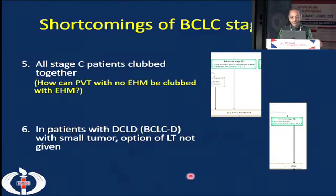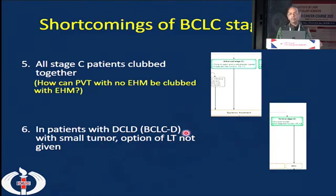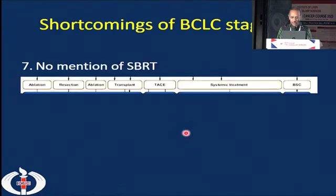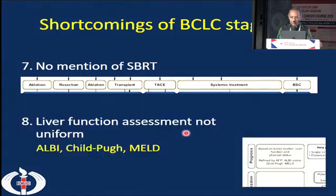Stage D BCLC patients who have a small tumor but decompensated chronic liver disease have not been given the liver transplant option. We all know that patients with a small tumor but decompensated cirrhosis would definitely benefit from liver transplantation. Additionally, SBRT radiotherapy has come up recently as a very good treatment modality, often used for portal vein tumor thrombosis and even small tumors as an alternative to TACE, but it is not mentioned in the BCLC algorithm.